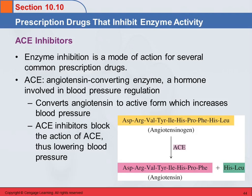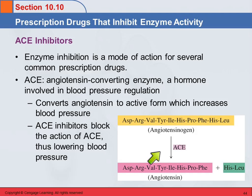ACE inhibitors block the action of this enzyme. So your body wants to raise the blood pressure, but this enzyme doesn't function, and so your blood pressure remains lower.